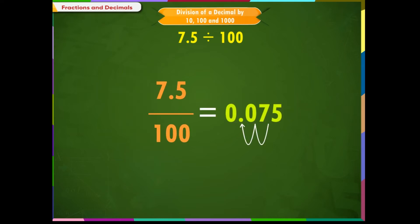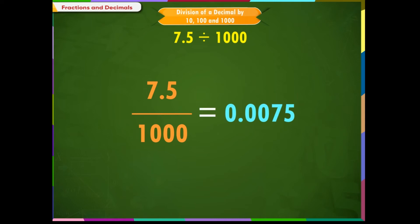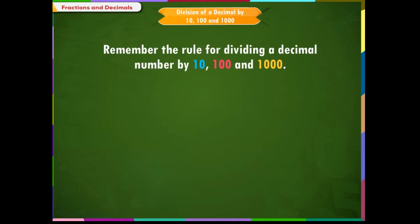What we observe in the result of this problem is that the digits of the decimal number remain the same, but the decimal point in the result is shifted to the left by two places, as the divisor 100 has two zeros. Similarly, we can divide 7.5 by 1000. The quotient will be 0.0075. The decimal point in the quotient is shifted to the left by three places as the divisor 1000 has three zeros. Remember the rule for dividing a decimal number by 10, 100, and 1000.